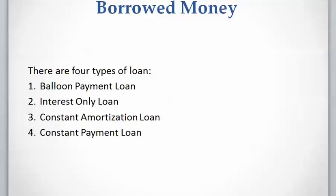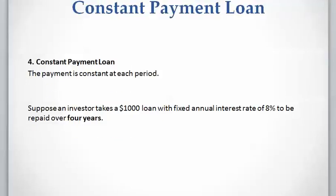There are four types of loans: balloon payment loan, interest only loan, constant amortization loan, and constant payment loan, which is the most common one. The first three types were explained in previous videos, and in this video I'm going to explain the constant payment loan, where payments made per period are constant.